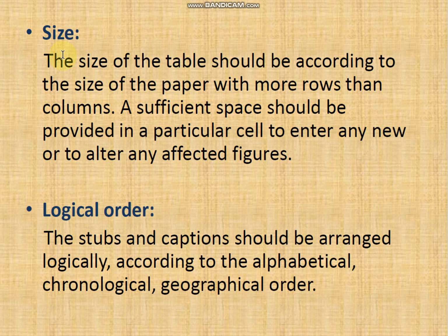The first point is size. The size of the table should be according to the size of the paper, with more rows than columns. Sufficient space should be provided in each cell to enter new data or to alter any figures. The table should fit the page properly — a table spanning two pages should be avoided, as the basic function of the table is to present data in a smaller, condensed form.